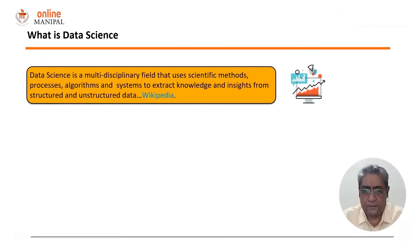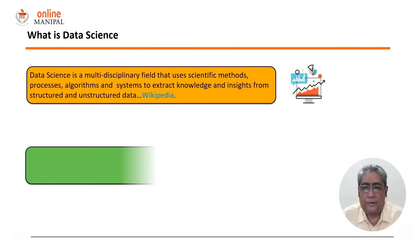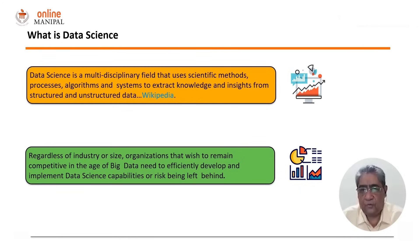Data science is a slightly different area. It is basically a multidisciplinary field that uses scientific methods, statistical processes, and different kinds of mathematical algorithms and systems to extract knowledge and insights from both structured and unstructured data. With the coming of age of big data, organizations of all sizes have realized they need to do data science activities to remain competitive, so data scientists are in demand across all industries.